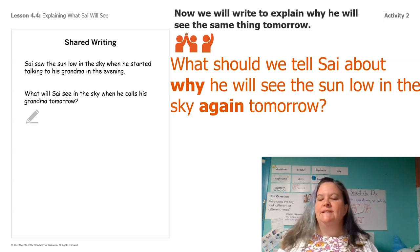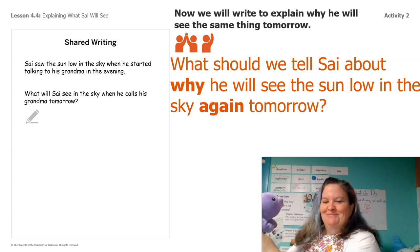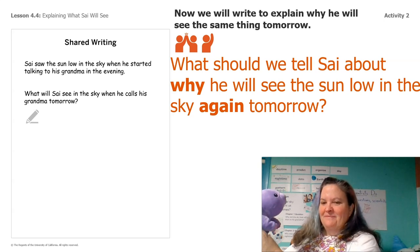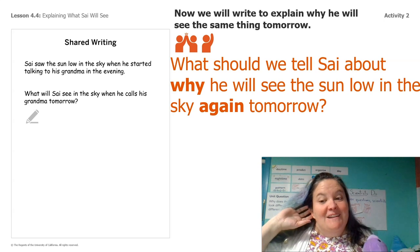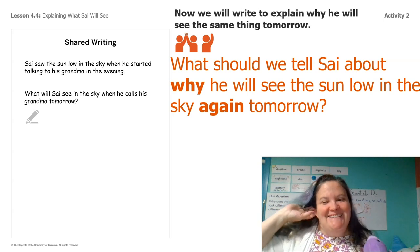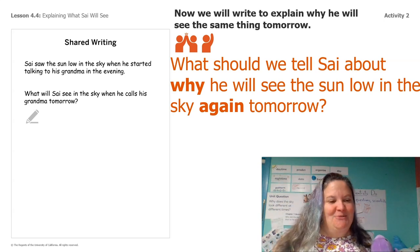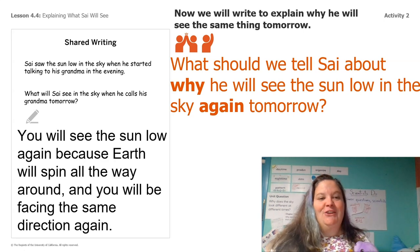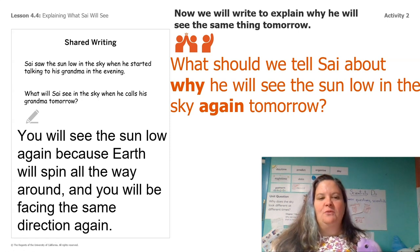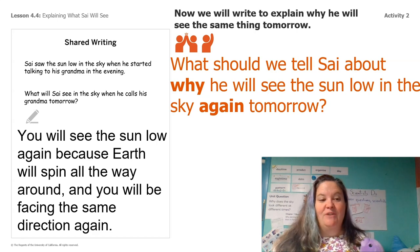Why do we know he's going to see that? Go ahead, talk to your partner. Did I hear somebody say because the earth spins? Yeah. So let's write that as a full sentence. Let's read it together: you will see the sun low again because earth will spin all the way around and you'll be facing the same direction again.